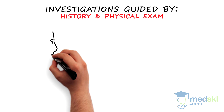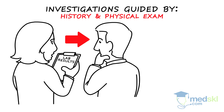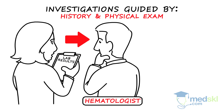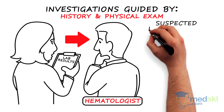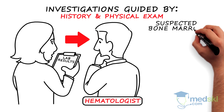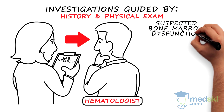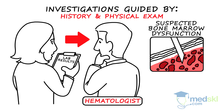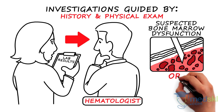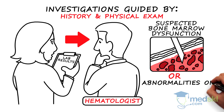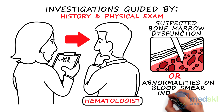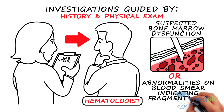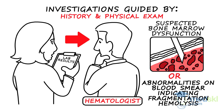An urgent referral to a hematologist is appropriate in patients with suspected bone marrow dysfunction that requires a bone marrow aspirate or biopsy to confirm the diagnosis, or if the patient has abnormalities on blood smear indicating fragmentation hemolysis.